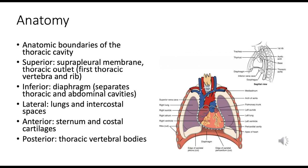The thoracic cavity, also known as the chest cavity, houses vital organs such as the heart and lungs, encased by the rib cage. Its superior boundary includes the suprapleural membrane — a fibroelastic membrane covering the apex of the lung stretching up into the neck — and the thoracic outlet, with the first thoracic vertebra and first rib marking its boundaries.